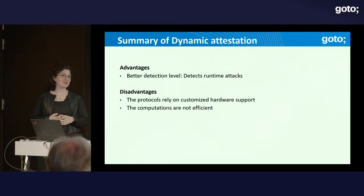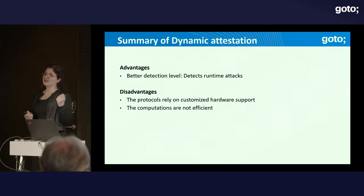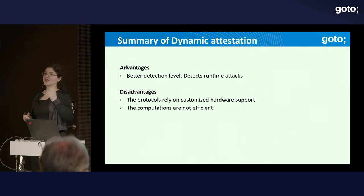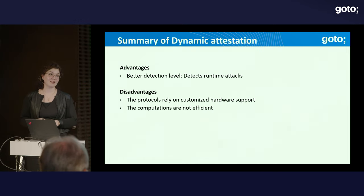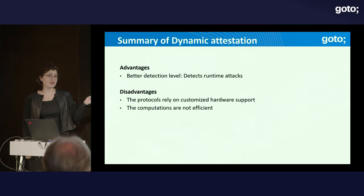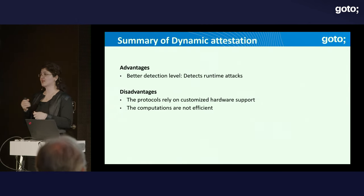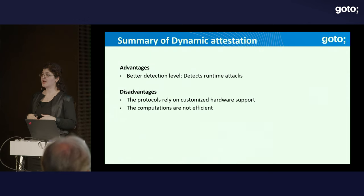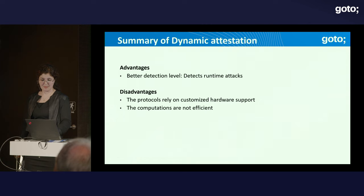This is called dynamic attestation, control flow attestation, or runtime attestation — many synonyms. The goal is to detect attacks that compromise the device without injecting new code, and these are realistic attacks. This protocol has a high overhead because it relies on software instrumentation to trace execution, but there have been improvements such as hardware-based instruction capture.